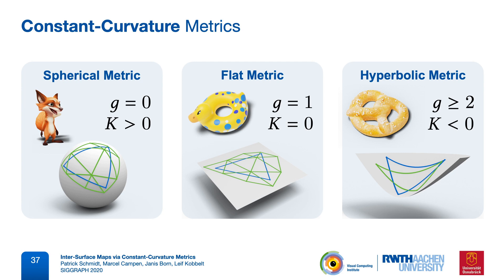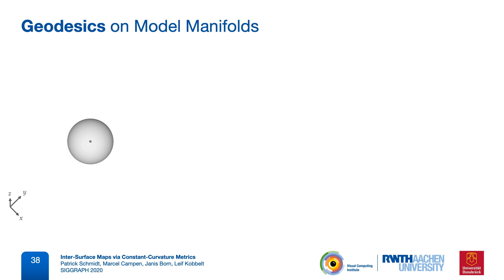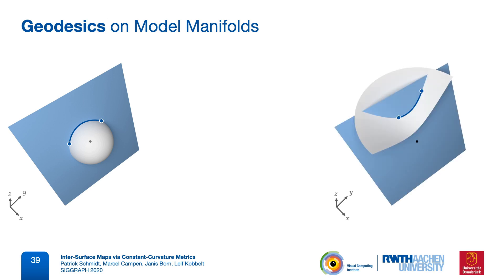Now how do we compute geodesics on a surface with respect to a constant curvature metric? We could solve some PDE on the discrete surface. Or, and this is the key benefit of having these three model manifolds, we can use very simple constructions directly on the sphere, the plane, and the hyperboloid. A geodesic on the sphere is the intersection of a plane through the origin with that sphere. We chose the hyperboloid model because the exact same construction works here too. Geodesics are intersections of the hyperboloid with a plane through the origin.